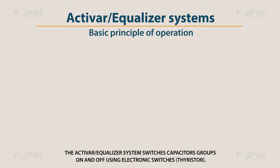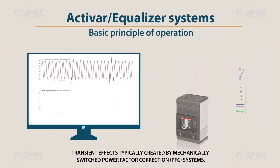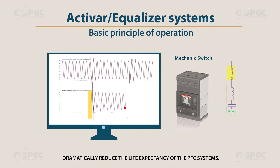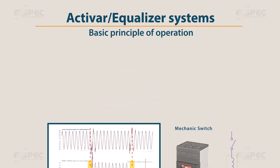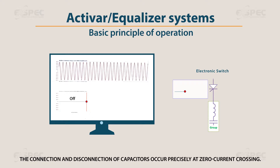The ACTIVAR equalizer switches capacitor groups on and off using electronic switches — thyristors. Transient effects typically created by electromechanically switched power factor correction (PFC) systems dramatically reduce the life expectancy of the PFC systems. The advantage of the AC-EQ systems is that the connection and disconnection of capacitors occur precisely at zero current crossing.